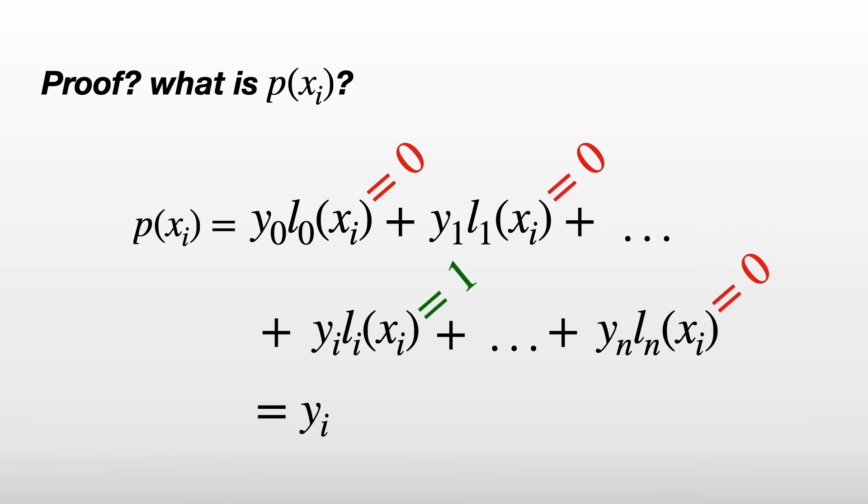So we end up with y_i times 1, or just y_i, and this is exactly the condition we wanted to prove. p(x_i) is equal to y_i for any i.